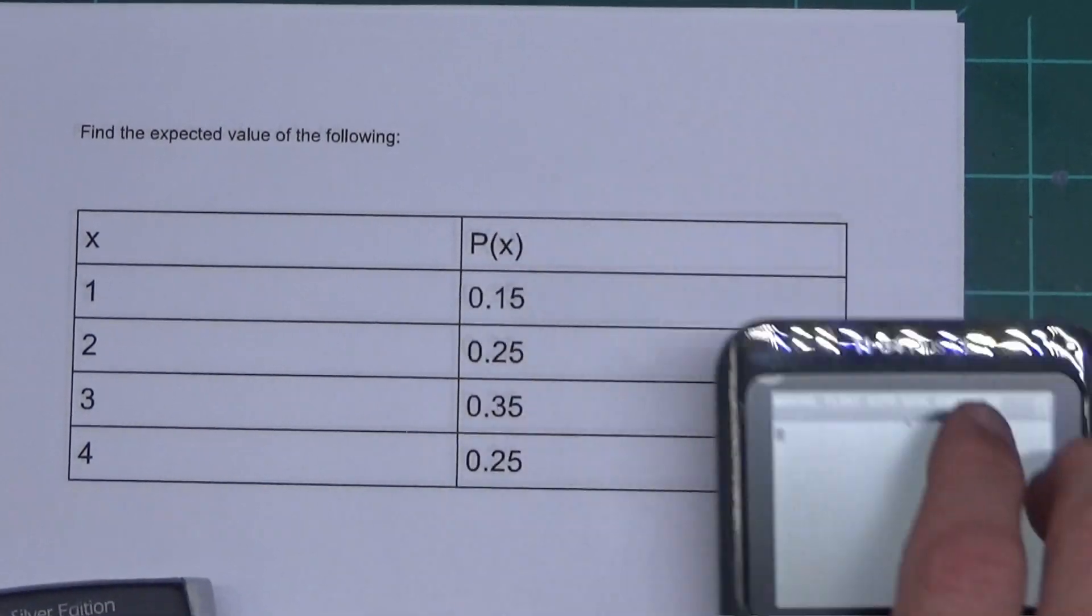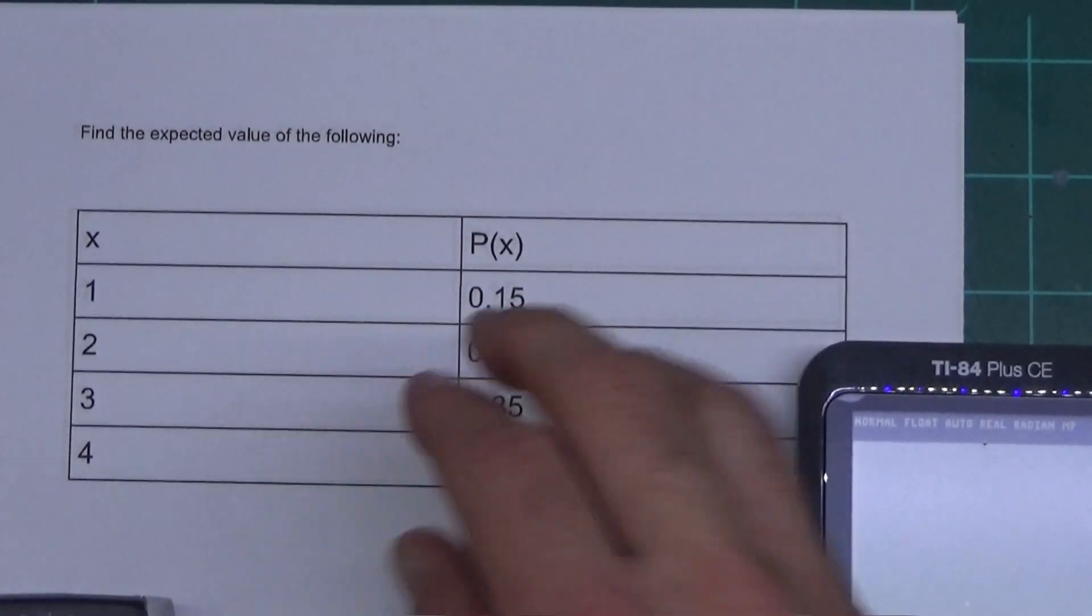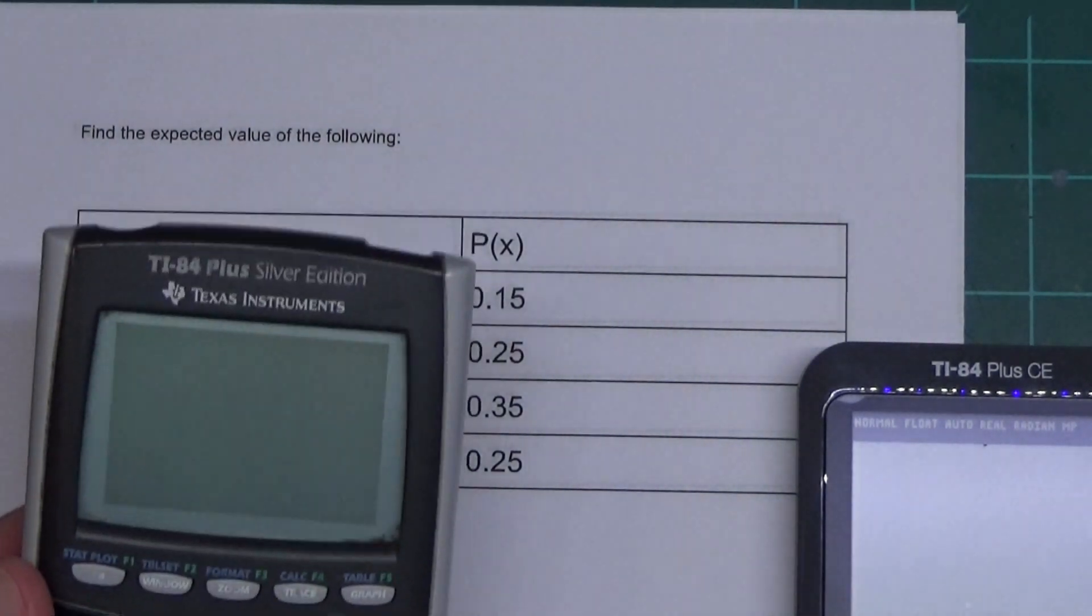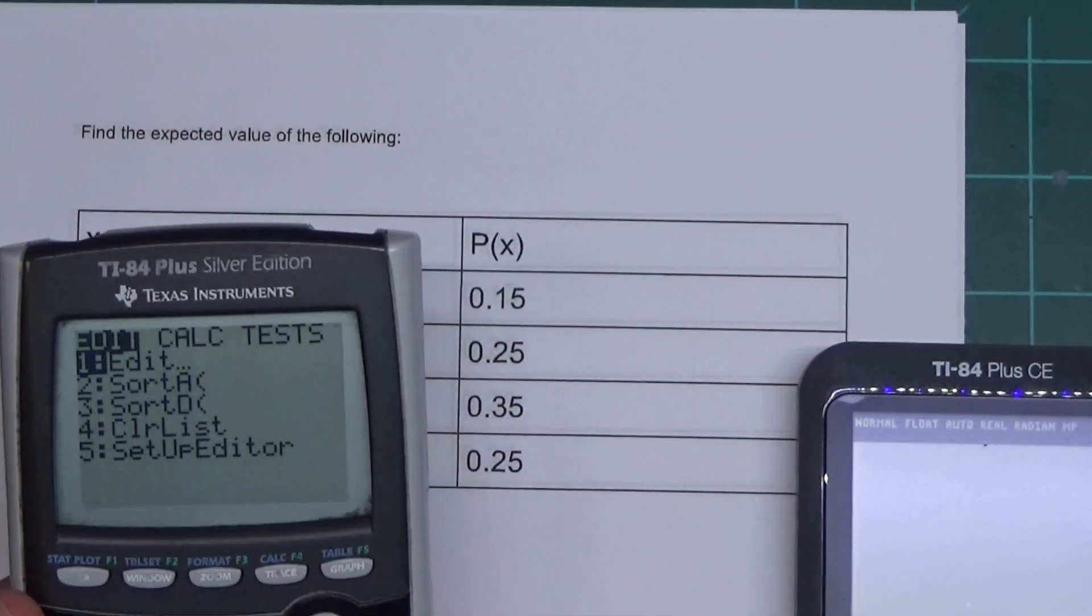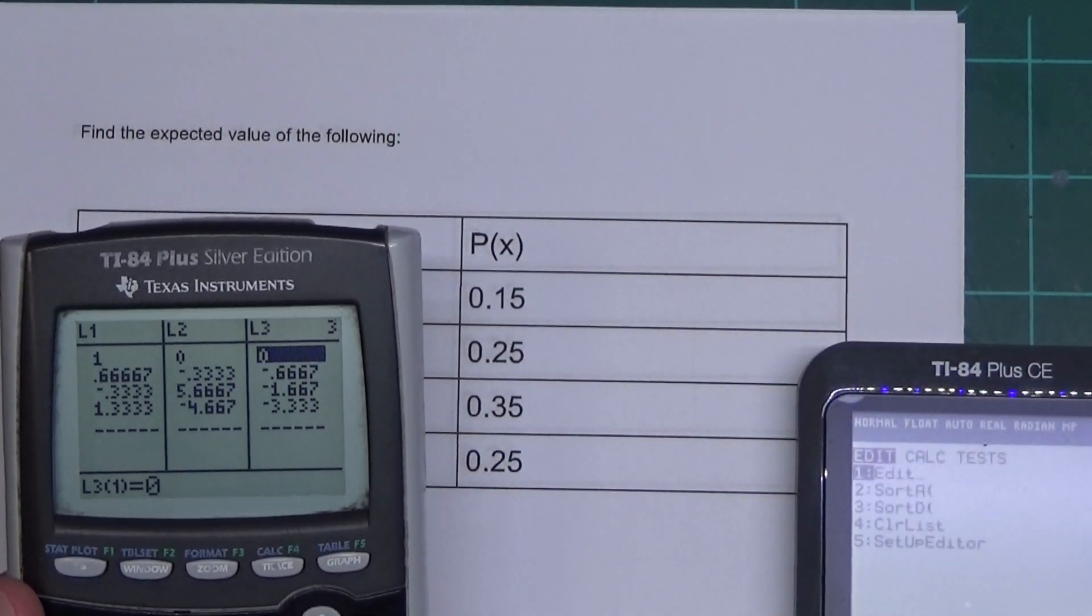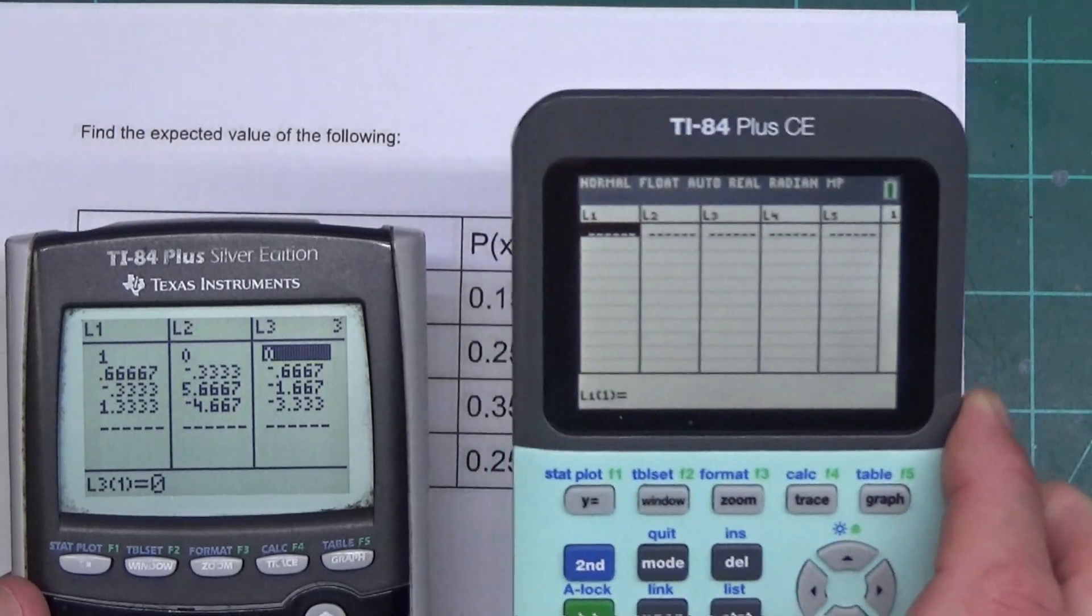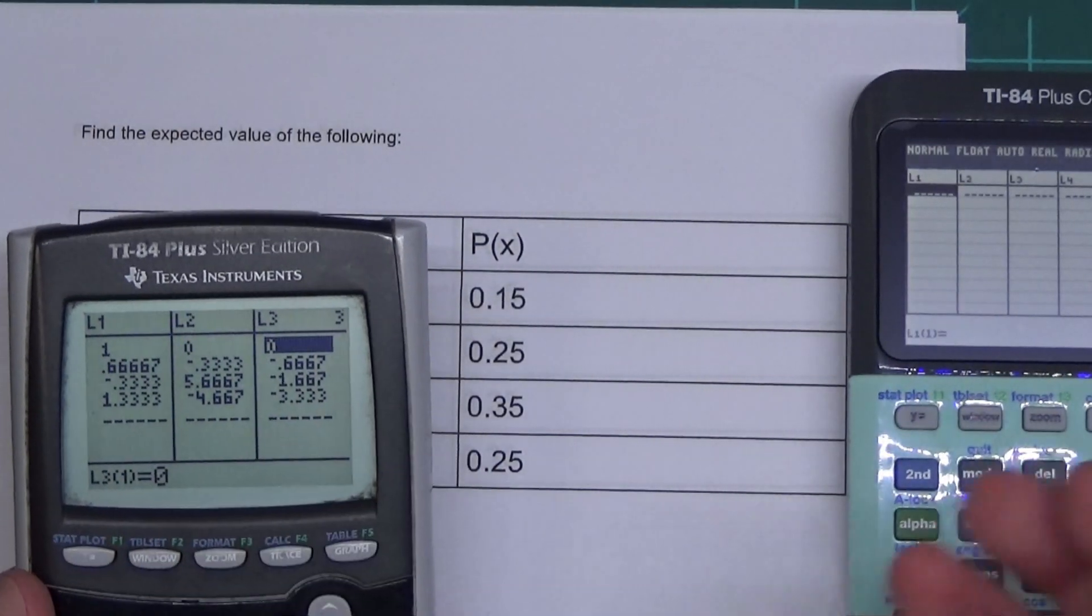First, we need to get our data in there, and I was an idiot and made this way too big, so I'm going to have to squeeze everything down here. First, what we do is we press STAT, hit Enter, and there's numbers in here, and on both calculators, I'm going to have numbers. This one's cleared. I don't really use this one except for videos. This one gets used for other things.